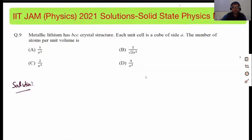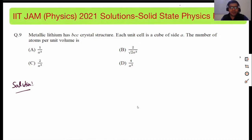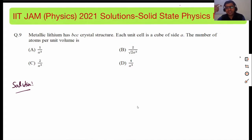So this was the question asked in IIT Jam Physics 2021. It says that metallic lithium has a BCC structure. Each unit cell is a cube of side A. We need to find the number of atoms per unit volume. So it is a standard result. In a BCC crystal, the number of lattice points per unit cell is two. So the number of atoms per unit volume will be 2 by A cubed.